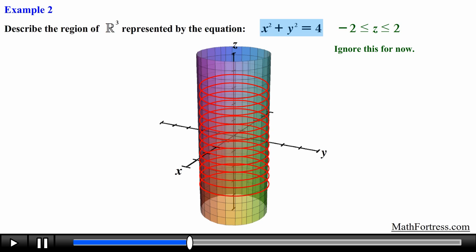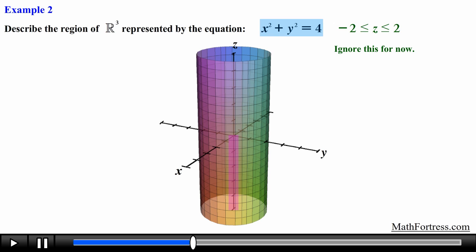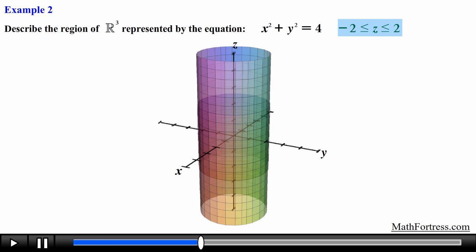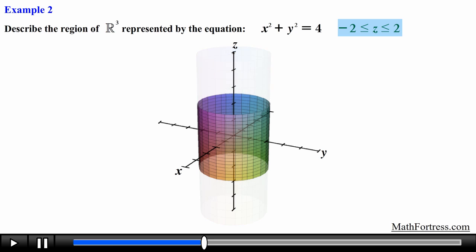Technically this cylinder extends all the way to positive infinity in the positive z direction and negative infinity in the negative z direction. Now let's apply the restriction. The inequality describes an interval — the acceptable values of z are between negative 2 and positive 2 inclusive. This means our cylinder will only have copies of the circular trace between these values of z.